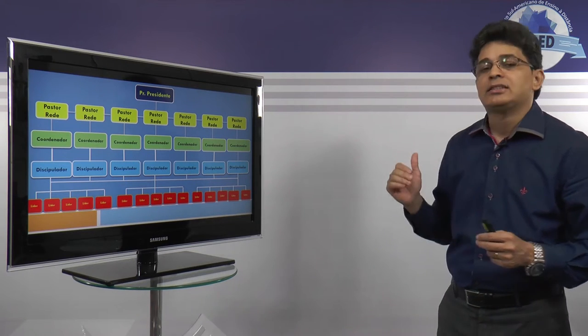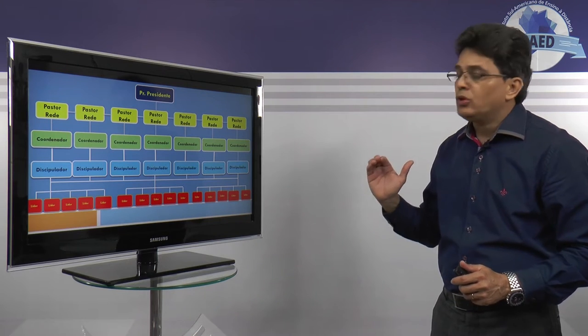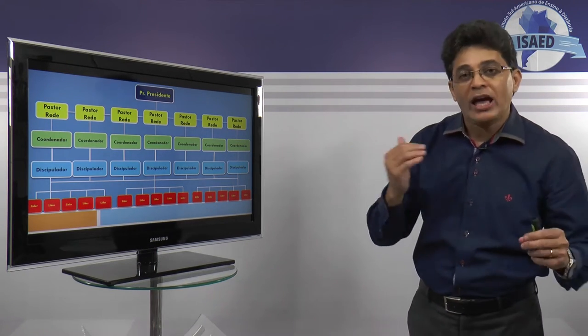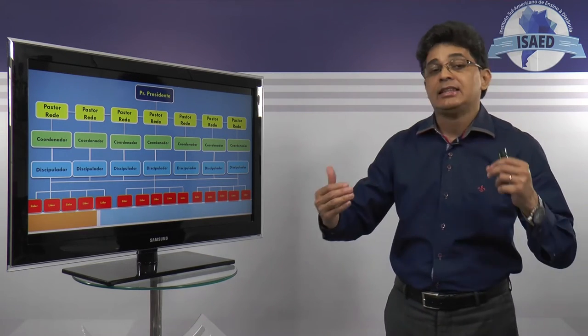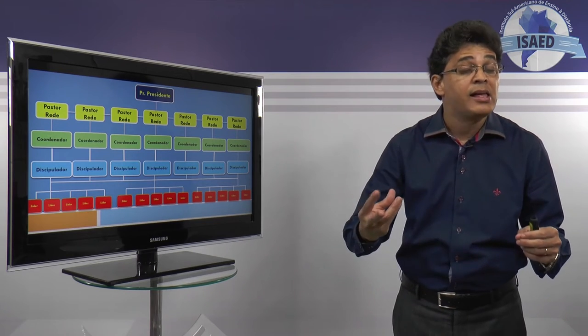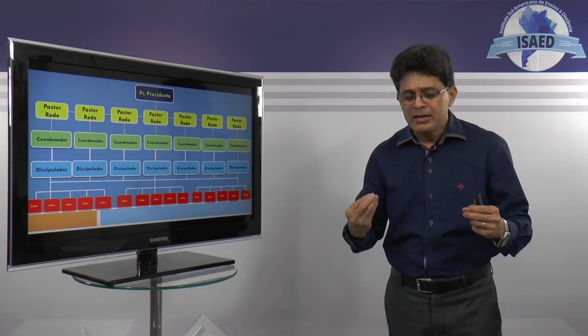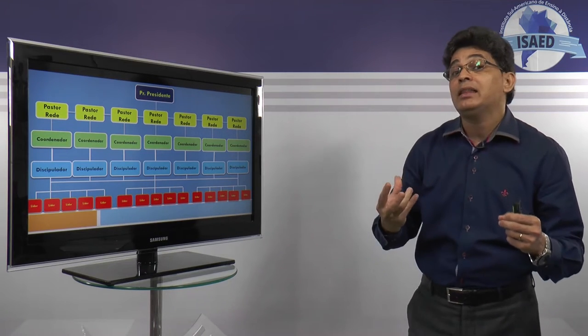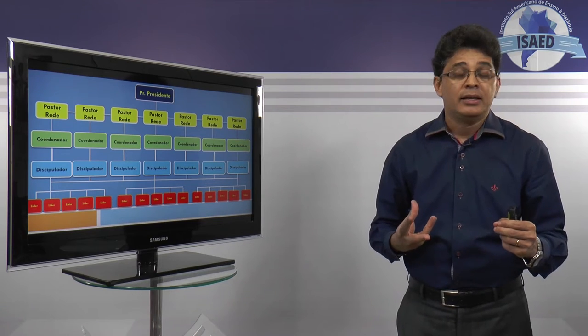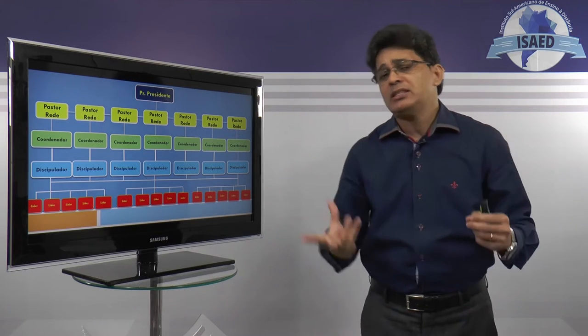Nas aulas anteriores eu falava de que essa figura do líder, na medida que ele vai entendendo a visão e o projeto da igreja, ele precisa também dar resultados no sentido de fazer com que a sua célula seja multiplicadora. Daí a importância de o líder observar aqueles que estão participando na sua célula em que todos que estão ali, em tese, são líderes em potencial.